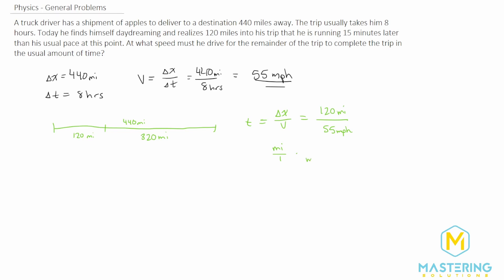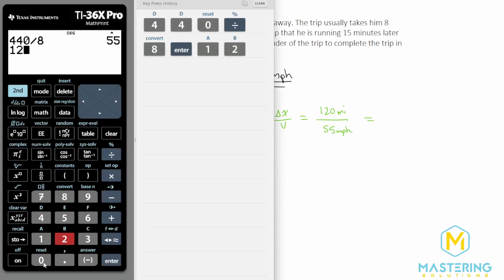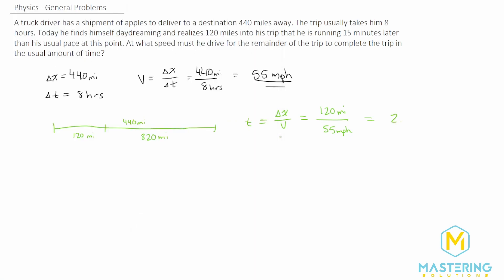So instead of miles on the top, now miles are on the bottom and hours are on the top. So this is how we end up with hours here. So then we have 120 divided by 55. The time that it typically takes him to get to this point is 2.18 hours.